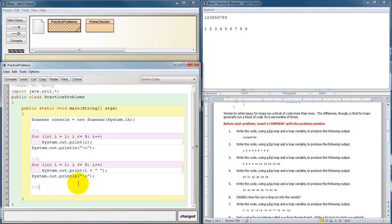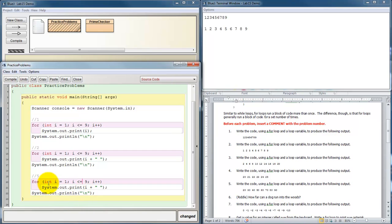Problem five says write the code using a for loop and a loop variable to produce the following output. 20, 30, 40, 50, 60, 70, 80, 90. Alright. Let me borrow this. Throw it in here. Let's make some adjustments. Int i equals 1. So that's where we're starting i. Is that where we want to start i? Maybe it would be easier if we started i at 20. And how long do we want this to run? Well the last number is 90. So we want to go as long as i is less than or equal to 90. Greater than 90 would be a problem.